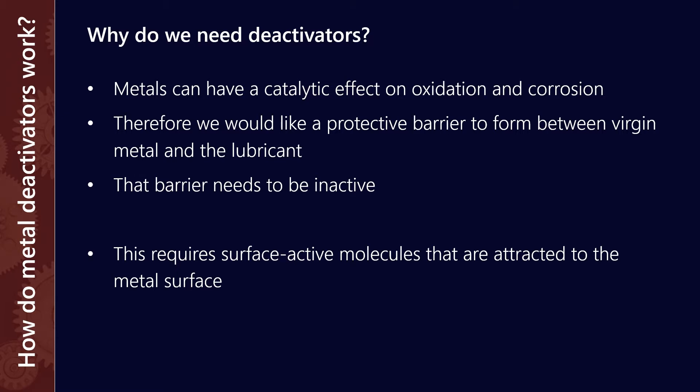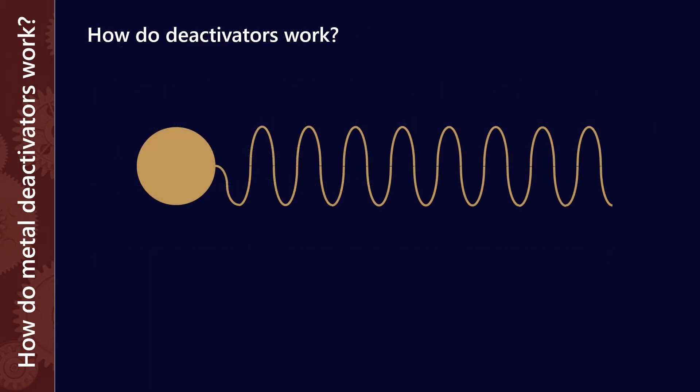So what this requires is some kind of surface-active molecule that's attracted to the metal surface. Deactivators work much like a lot of other additives in that they have two components: a polar head and a non-polar tail. The polar head will be attracted to metallic surfaces, while the non-polar tail will be attracted to the lubricant and make it soluble in the lubricant.